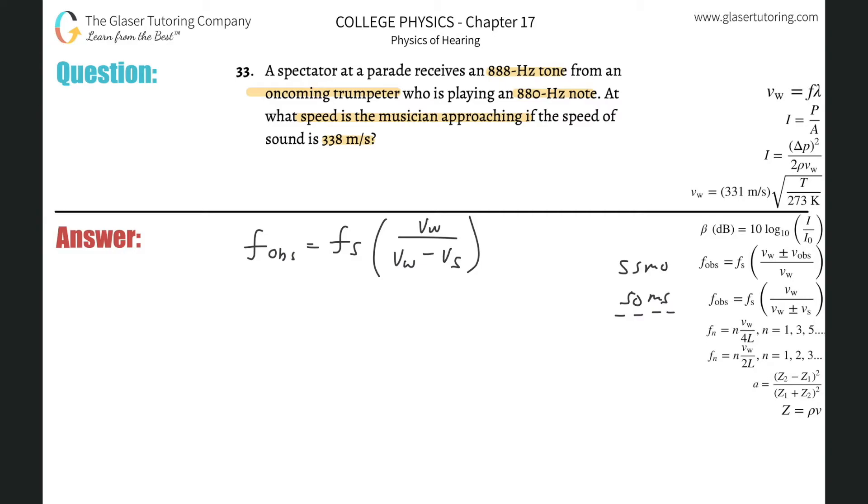Now all we got to do is basically just plug in. The frequency that the observer is experiencing is going to be 888 hertz. The frequency the source is producing is 880 hertz. The velocity of the sound is 338, divided by 338 minus the velocity of the source.